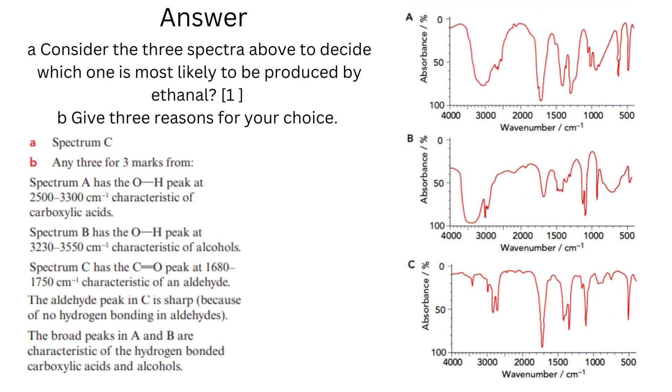The aldehyde peak in C is sharp because of no hydrogen bonding in aldehydes. The broad peaks in A and B are characteristic of the hydrogen bonded carboxylic acids and alcohols.